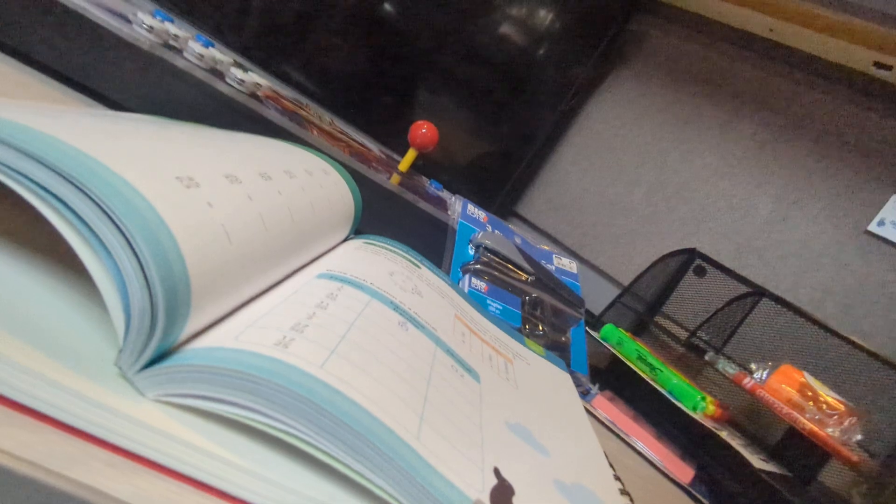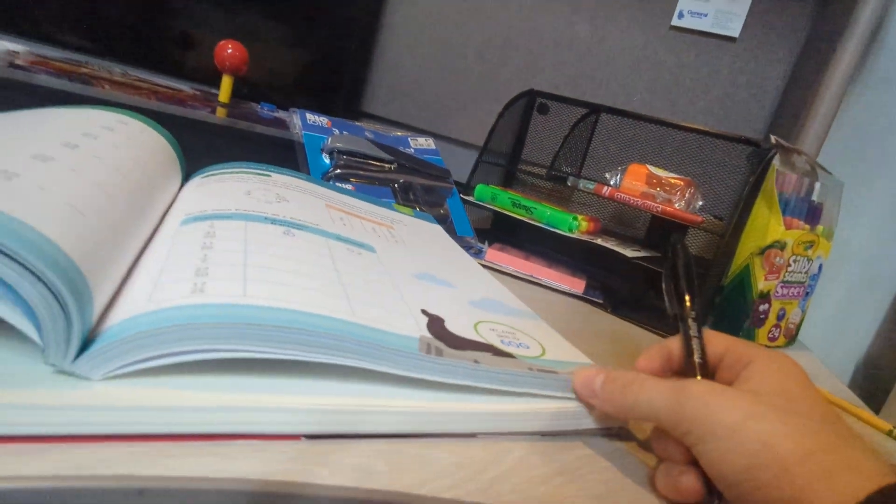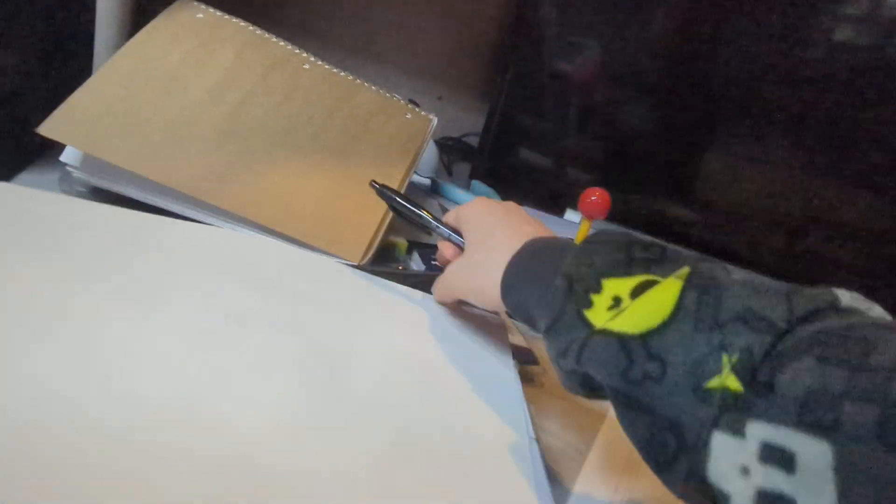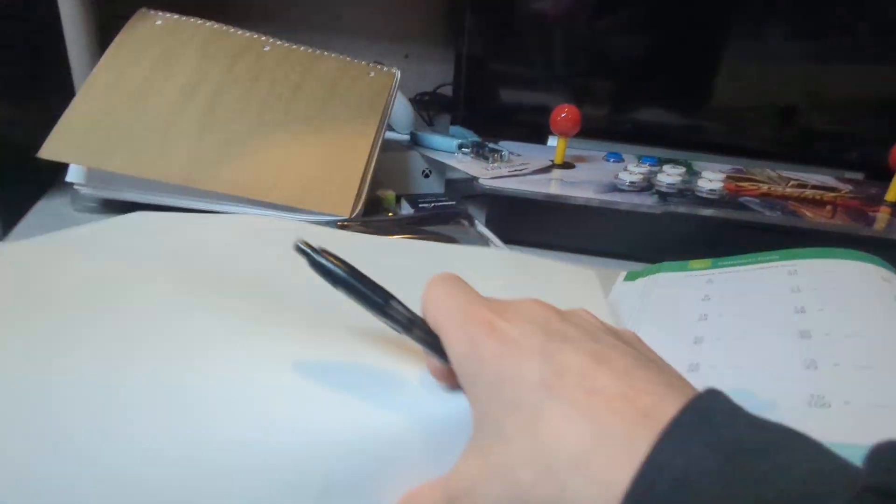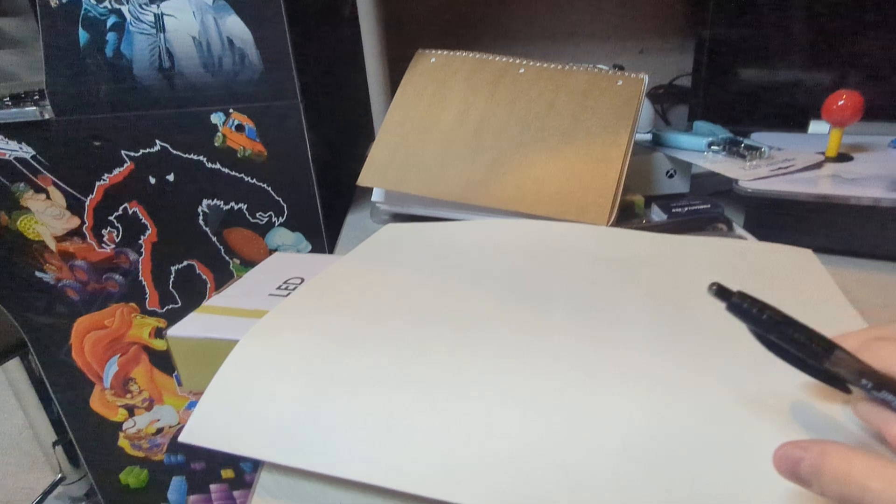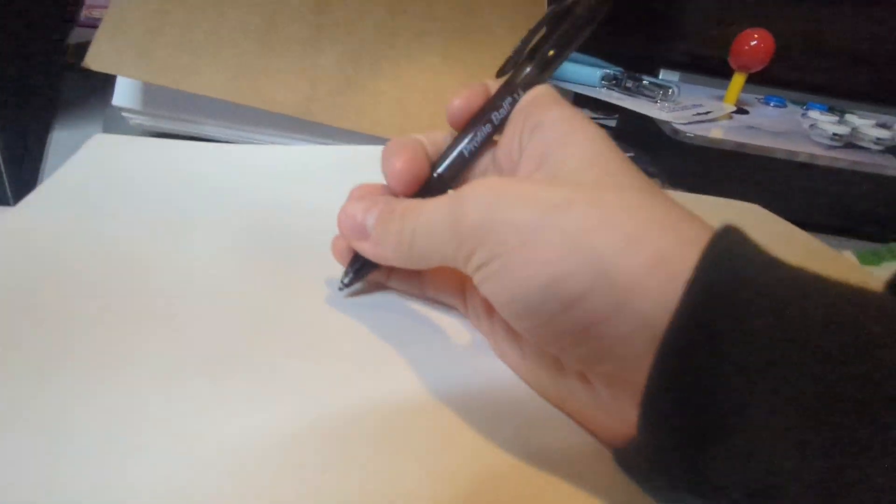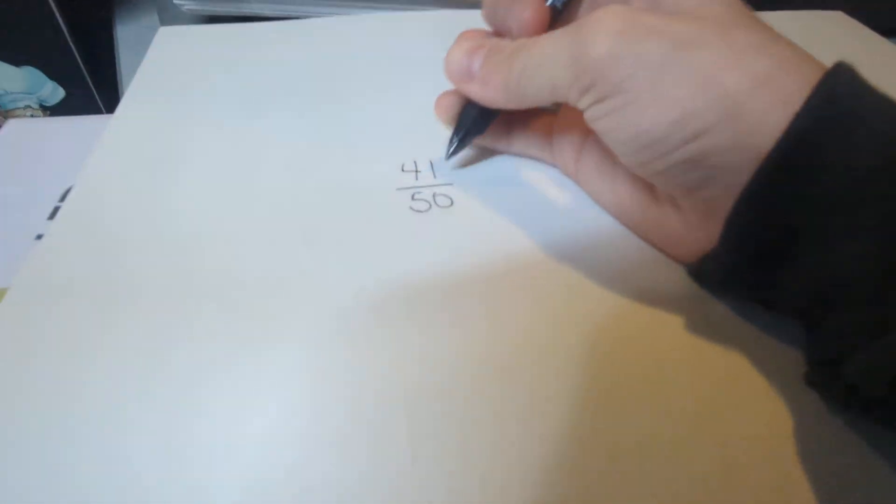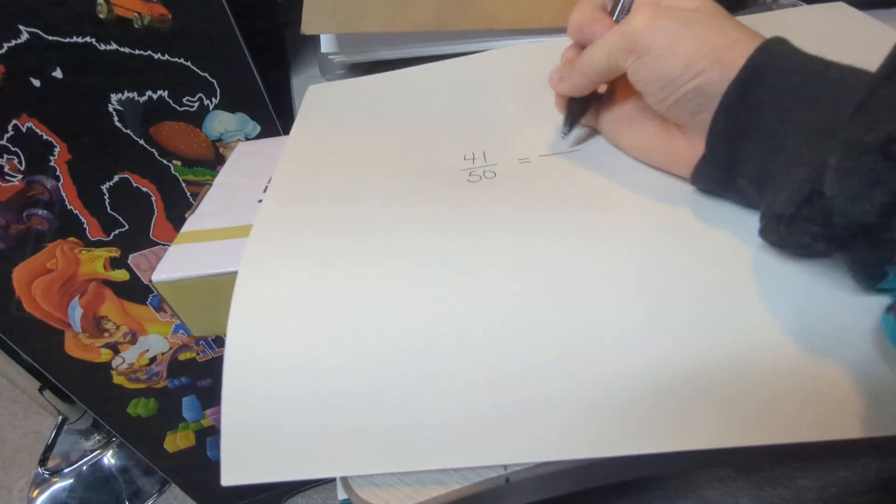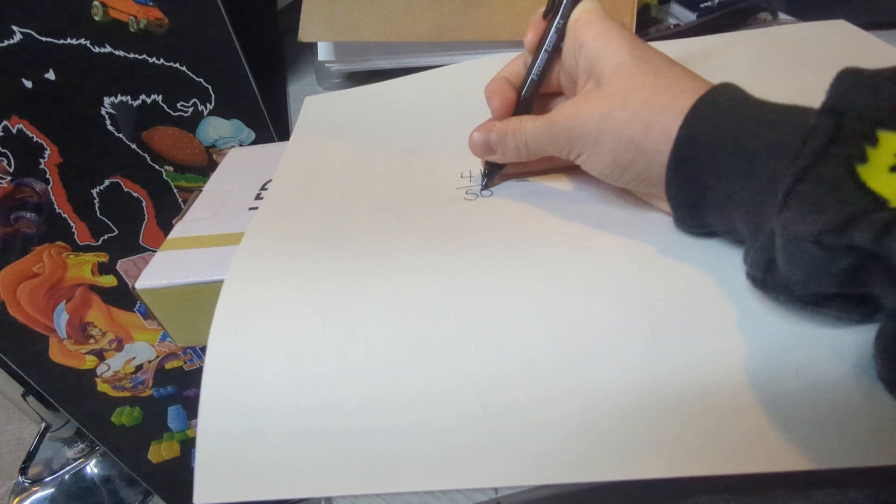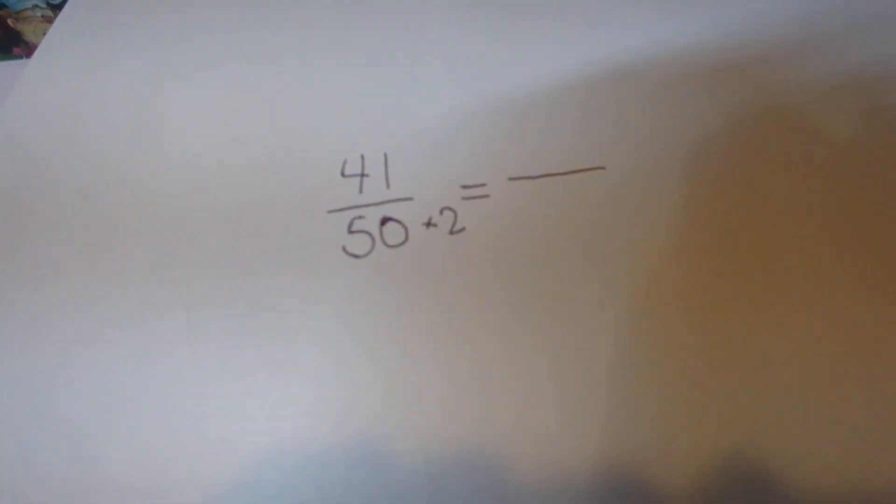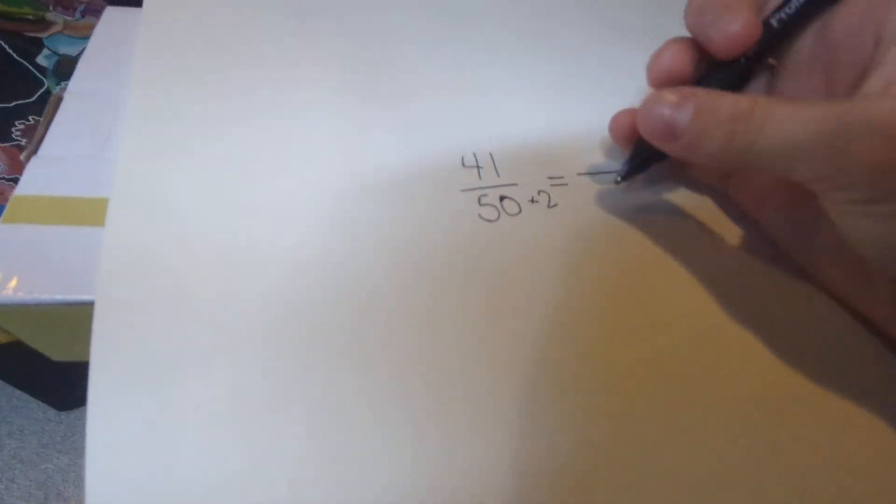He used it right. So now we're going to be teaching you for 41/50. So 41/50. Here you go. Multiply it by 2. So 50 times 2 is 100.